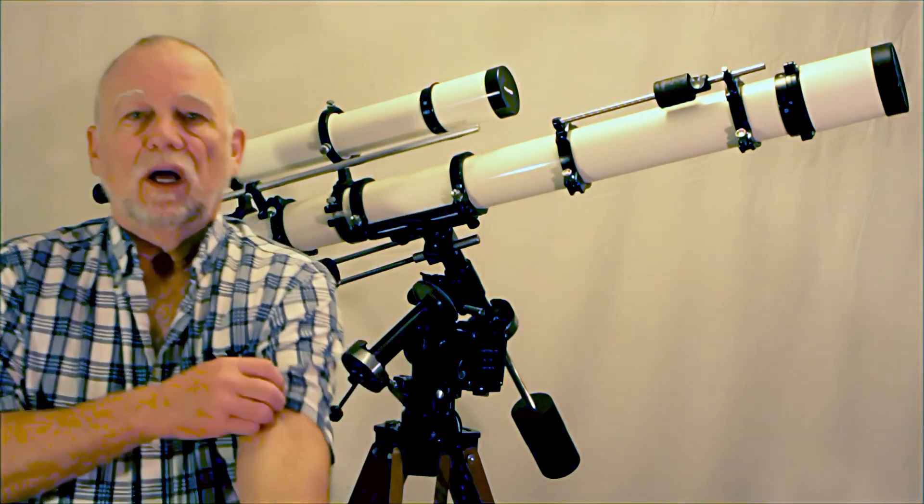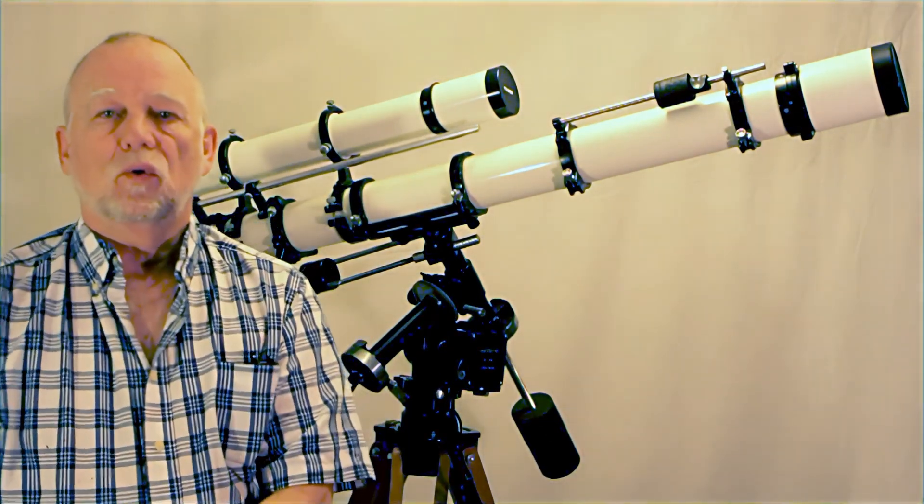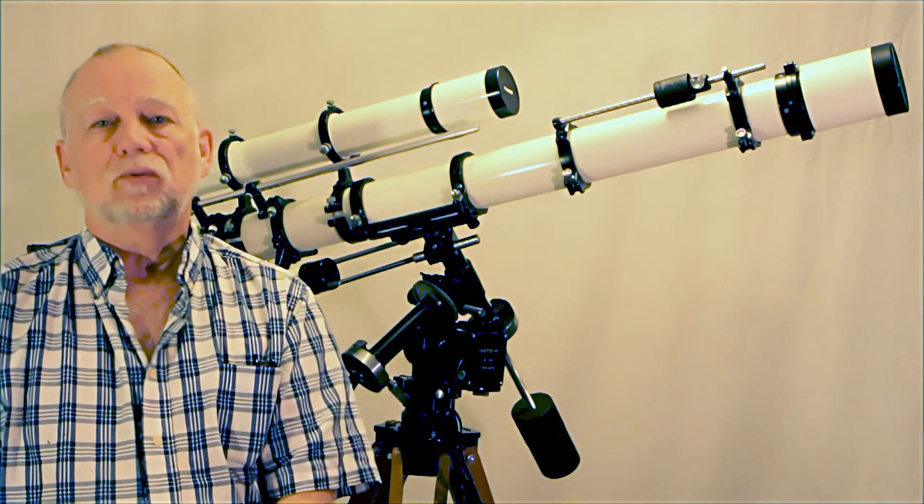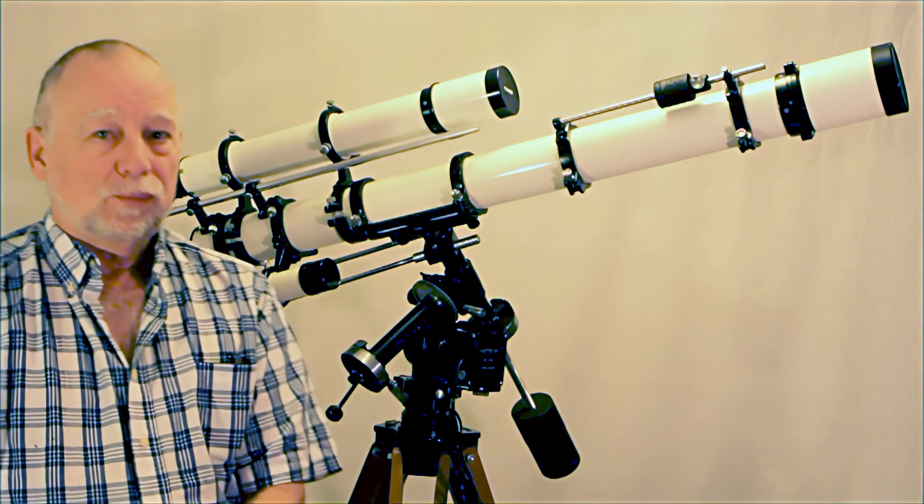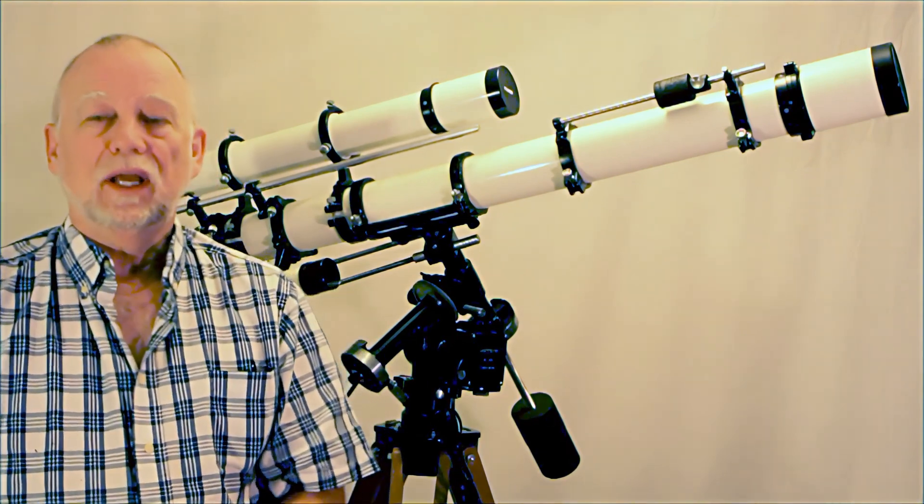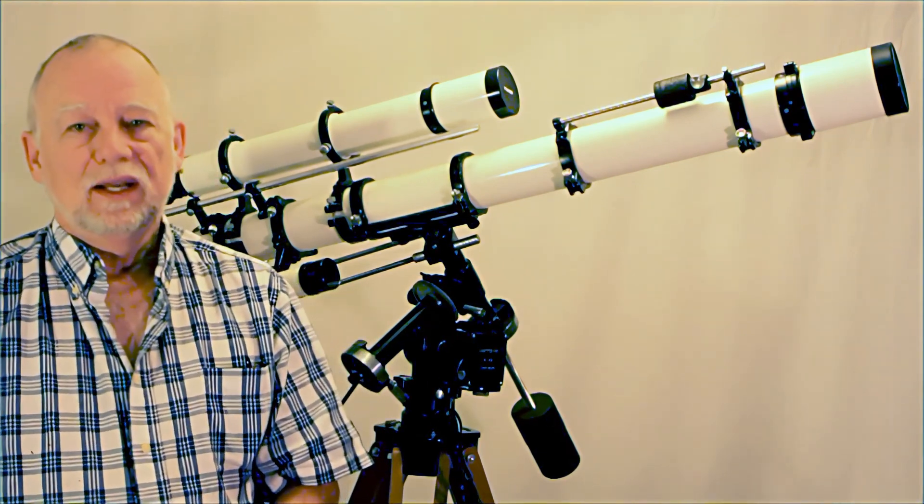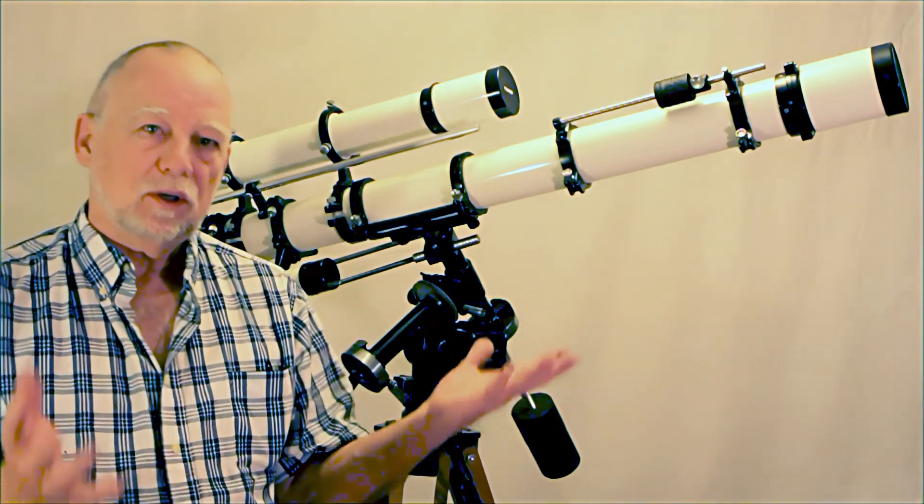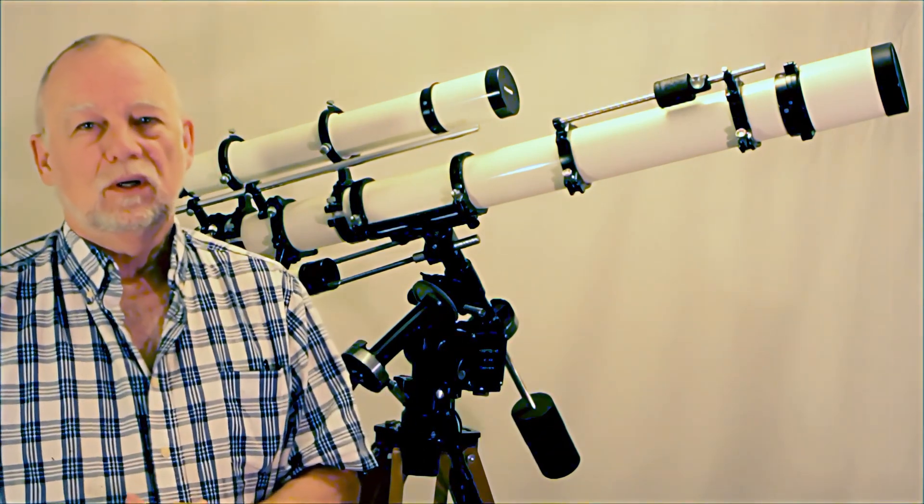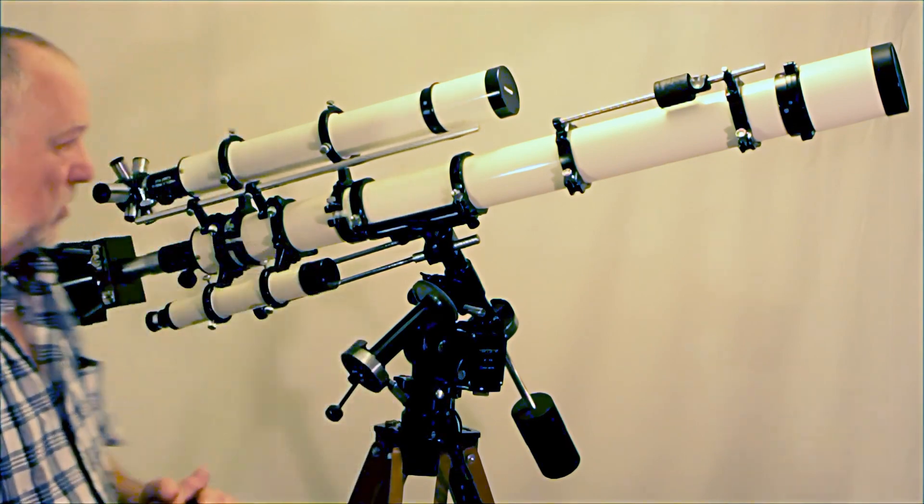This telescope didn't start life as a Unitron 145C. As a matter of fact it's assembled from various components. Proper name for this scope probably could be called a Frankentron. That is a Frankenstein Unitron assembled from various parts and components gathered from all sorts of different locations. Let me show you how that works.